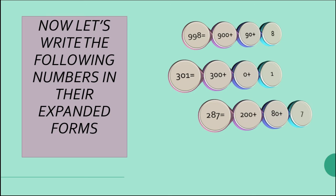Next number: 45, a 2-digit number. The tens place is 4, which means 40. The units place is 5. So the expanded form is 40 plus 5.